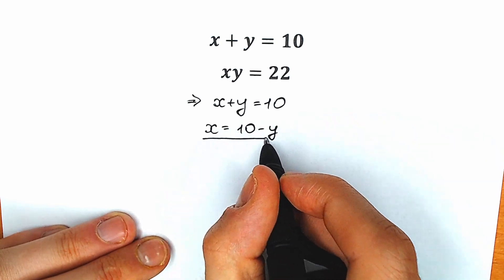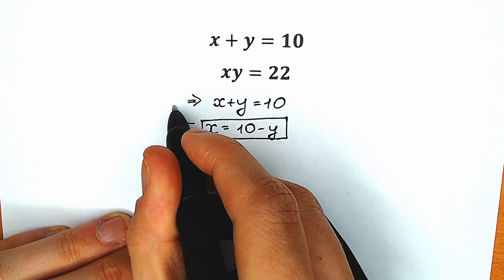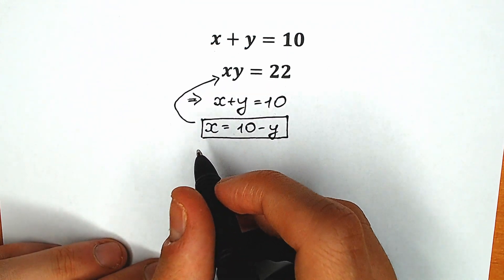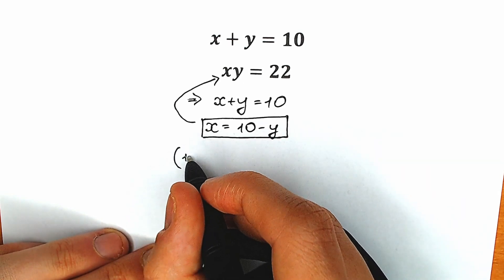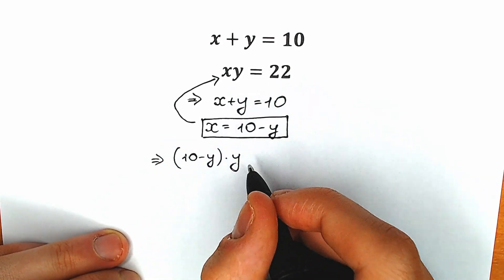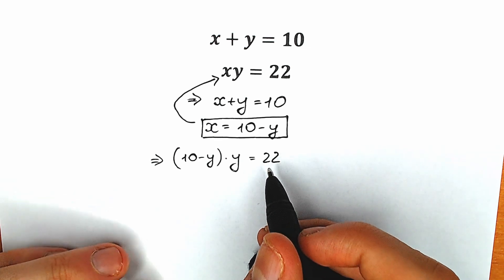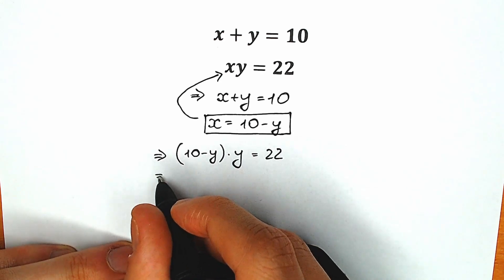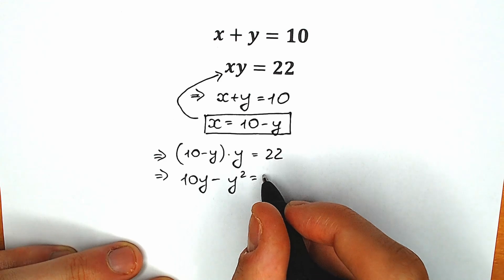This is an extremely important expression for us, because right now we're going to plug in this expression from the first equation into the second equation, into this spot. So as a result, we have 10 minus y in parentheses, times y, equal to 22. And it looks like a quadratic equation, so let's simplify this a little bit. As a result we have 10y minus y squared equal to 22.